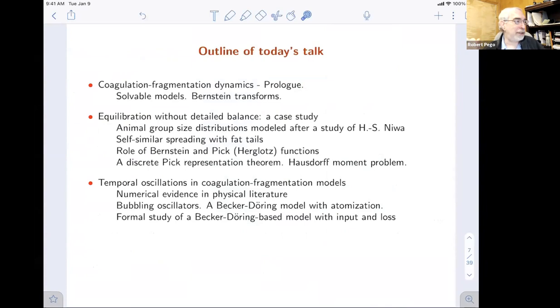Today's talk has three halves. The first part, I'll discuss what are solvable models and how do transform techniques allow you to study them, and then look at a special case of animal group size dynamics where equilibration happens without detailed balance and has some nice applications of complex function theory to do with Pick and Herglotz functions, and a connection to the famous Hausdorff moment problem. And then the second, third part, the third half of the talk, we'll talk about oscillations.